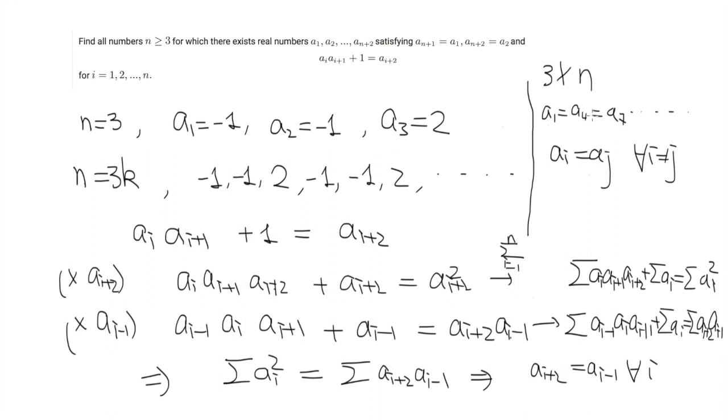This means that a_i equals a_j for any i different from j. By adding 3 to the indexes, we go through all the numbers between 1 and n, modulo n. This means that a_i squared plus 1 equals a_i, which is impossible because it doesn't have any real solutions. And this finishes the proof.